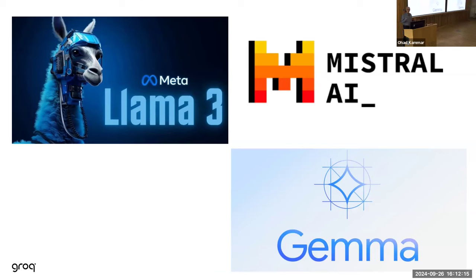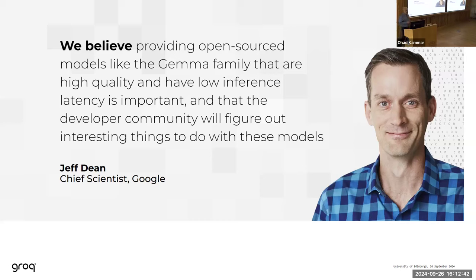I work at a company called Groq where we take open-weight large language models trained by other companies and run them efficiently at scale on our own hardware based on our own special machine learning chips, serving queries with low latency and high throughput. Some of the models we run are the LLaMA 3 models from Meta/Facebook, the Gemma models from Google, and models from Mistral AI. These companies give away open-weight models for free; Jeff Dean of Google told me they believe a developer community will figure out interesting things to do with these models.